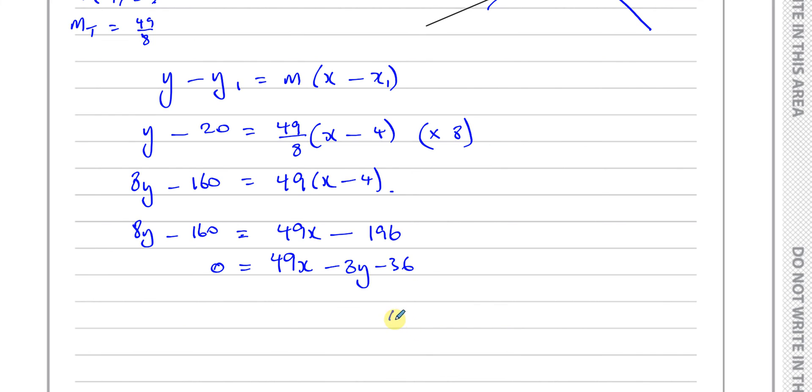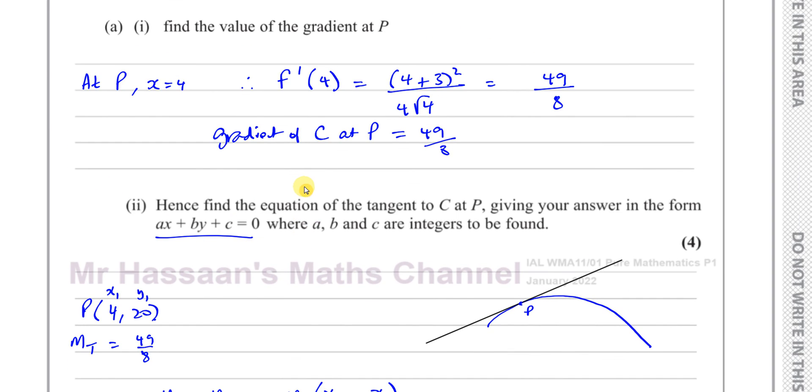So we can say in the end, our equation is 49x minus 8y minus 36 is equal to 0. And that's part A of this question.